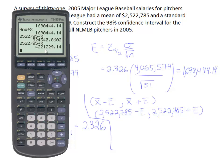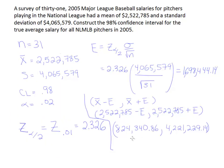Let's go ahead and copy that down. Remember, what this interval is supposed to contain is the true average salary — the true average salary for National League pitchers in 2005. That's what we have between these two values.